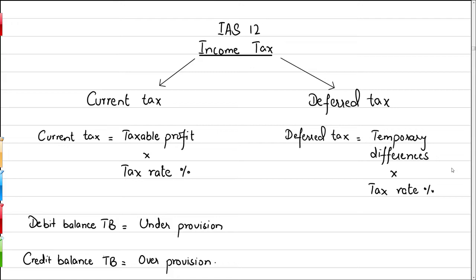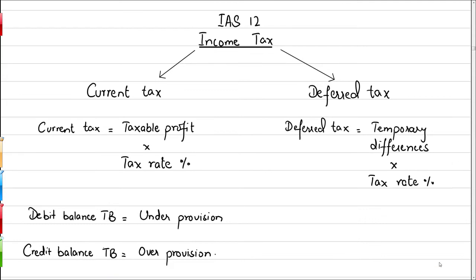The major issue that a student faces in this accounting standard is the terminology, because there are certain terms which are not used on a frequent basis. For example, in the case of income taxes, there is a huge difference between accounting profit and taxable profit, because taxable profit is based on the calculation of the tax authorities whereas accounting profit is based on the accounting standard. Current tax is calculated by multiplying the taxable profit with the tax rate, whereas deferred tax is calculated by multiplying the temporary difference with the tax rate.